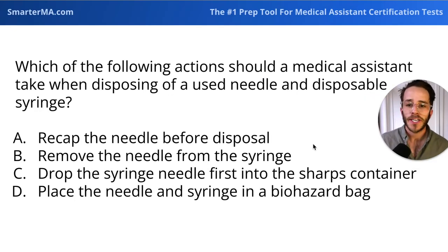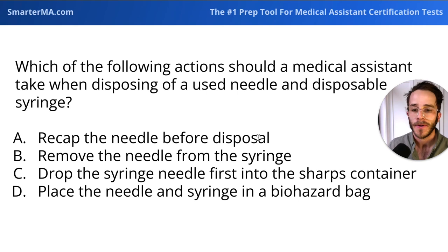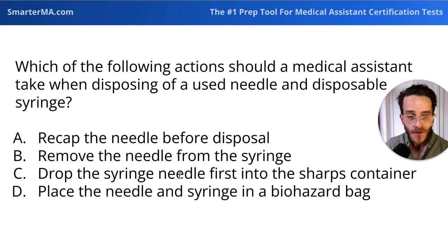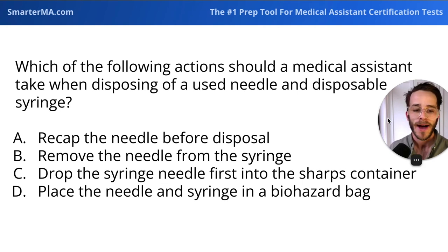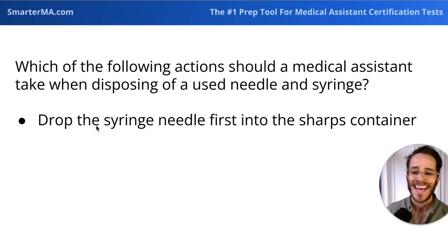Next question. Which of the following actions should a medical assistant take when disposing of a used needle and disposable syringe? A, recap the needle before disposal. B, remove the needle from the syringe. C, drop the syringe needle first into the sharps container. Or D, place the needle and syringe in a biohazard bag. The answer is C — drop the syringe needle first into a sharps container.